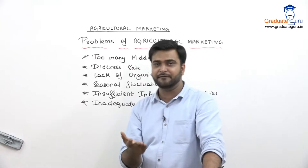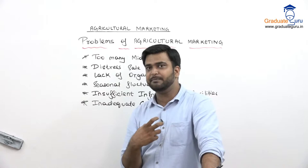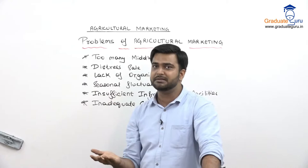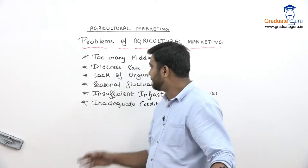Because of the middlemen, proper agricultural marketing from producer to consumer is not happening effectively. Second is distress sale — forced sale — where because of lack of holding capacity and the need for money, farmers sell their goods at whatever price they get, whether low or high, because they want to earn their livelihood and need to survive.